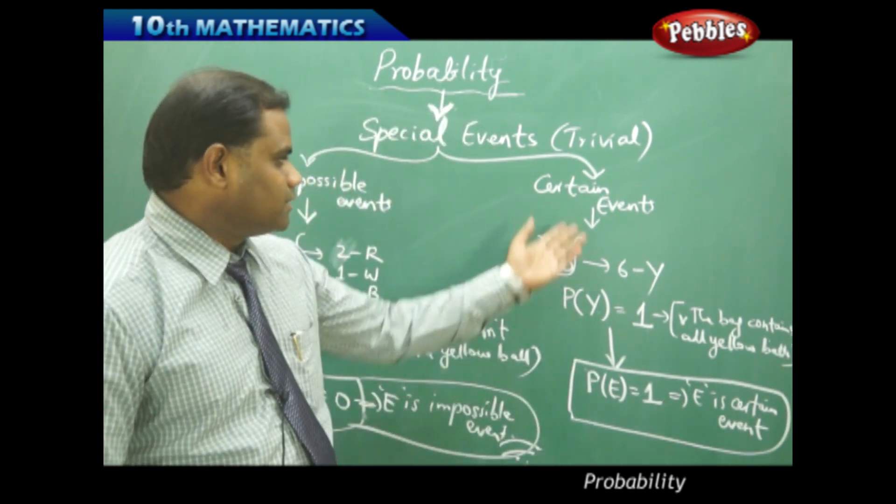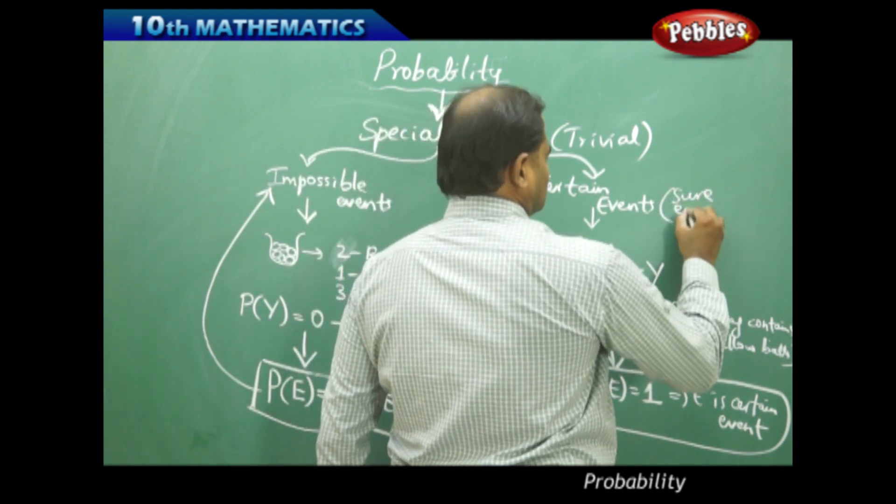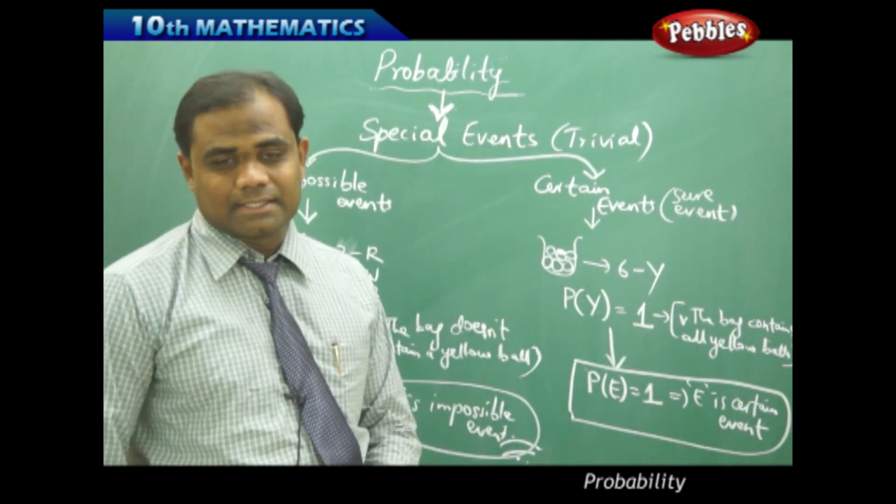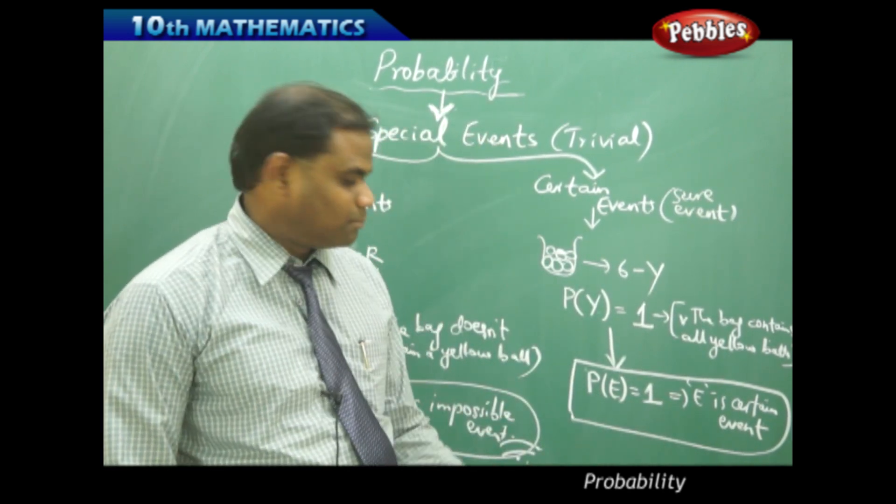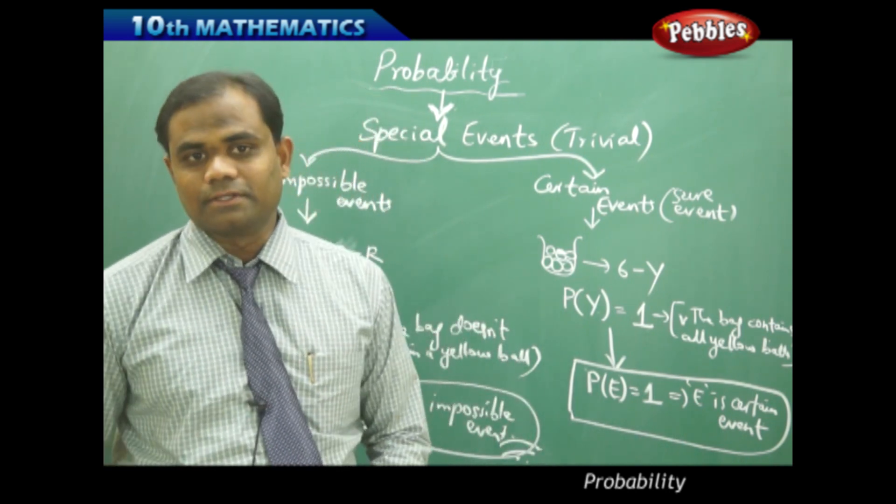The certain event here is also referred to sometimes as a sure event. Because it is sure to happen, we call that a certain or sure event if P(E) is one. This is how we understand the two special events in probability.